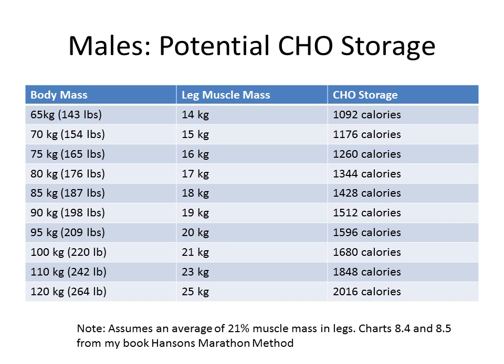The potential carbohydrate storage you can use is going to be mainly in your leg muscle mass, since that's what's doing all the work. For males, the average is about 21% of total muscle mass in the legs. You can get an idea based on your weight how much leg mass you have, and therefore how many calories of glycogen or carbohydrate you can store. Take a look at the chart to figure out where you're at for storage.